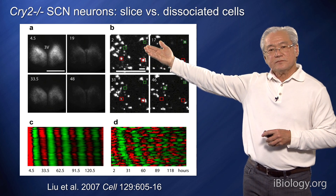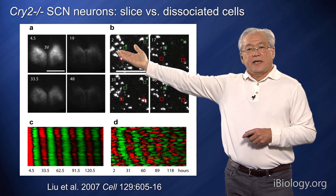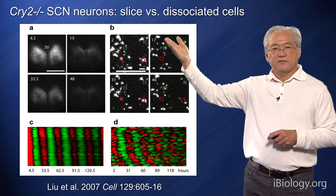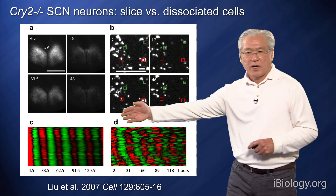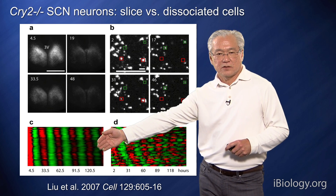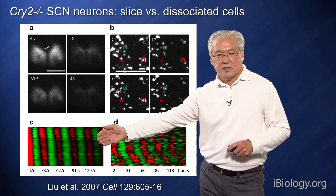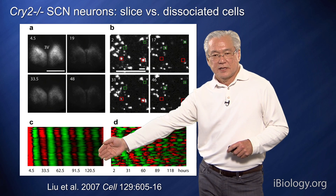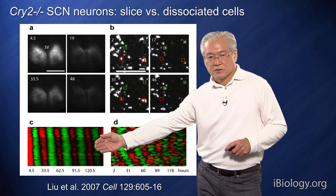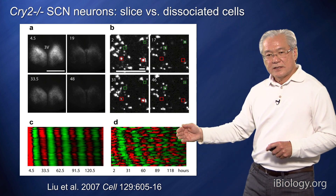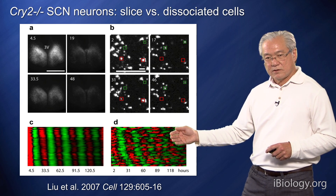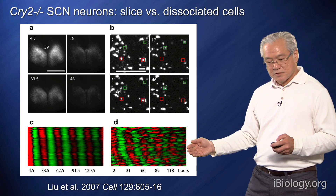Here's an experiment in which the SCN in a slice is compared to SCN-dissociated neurons, looking at the effect of the cry2 knockout. Shown on the bottom are heat map representations of single-cell recordings from SCN neurons, about 20 cells in each case. In cry2 knockout SCN neurons, the cells are coherent and synchronized, as indicated by the red and green stripes. But in dissociated SCN neurons, each of the cells can generate intact circadian rhythms, but they are no longer coupled, and so the pattern becomes fragmented.